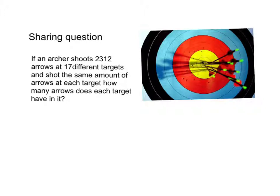And this is my sharing question. If an archer shoots 2,312 arrows at 17 different targets and shot the same amount of arrows at each target, how many arrows does each target have in it?